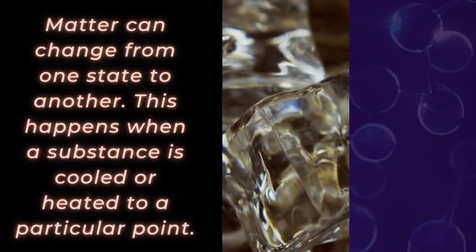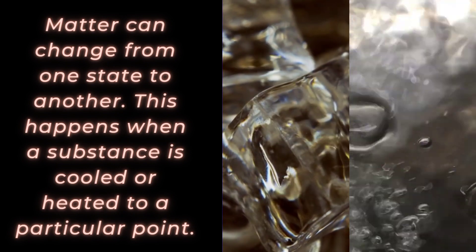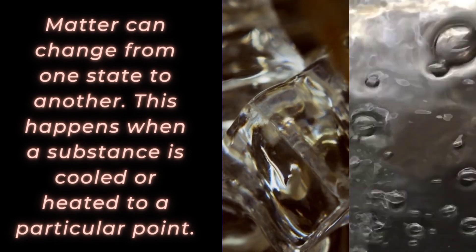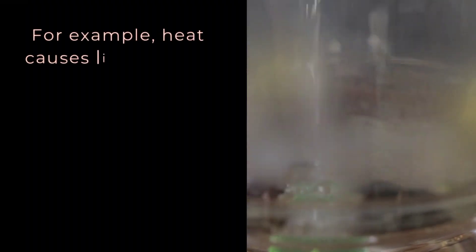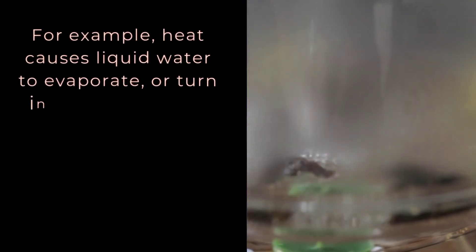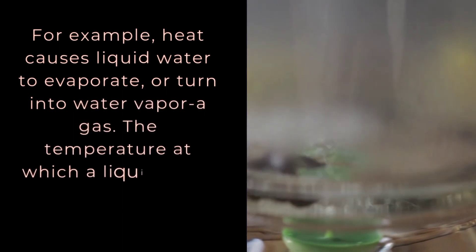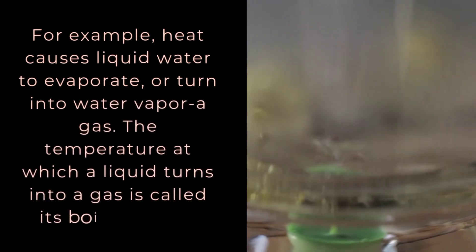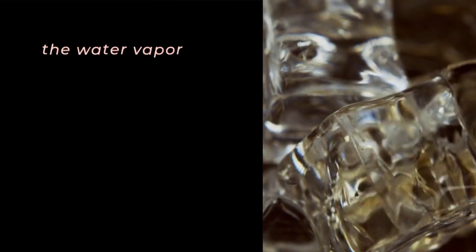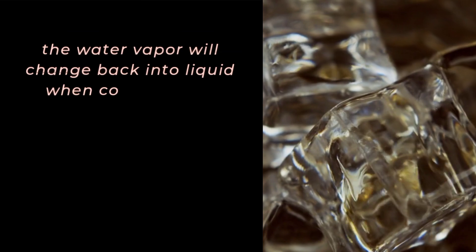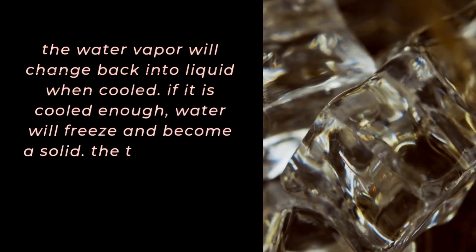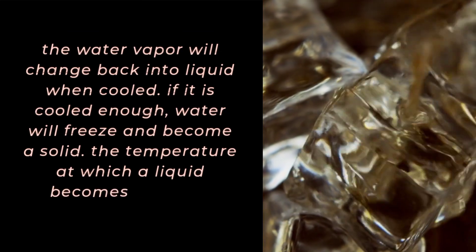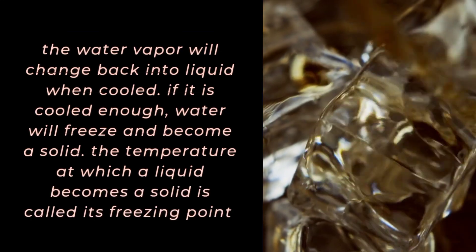Matter can change from one state to another. This happens when a substance is cooled or heated to a particular point. For example, heat causes liquid water to evaporate, or turn into water vapor, a gas. The temperature at which a liquid turns into a gas is called its boiling point. The water vapor will change back into liquid when cooled. If it is cooled enough, water will freeze and become a solid. The temperature at which a liquid becomes a solid is called its freezing point.